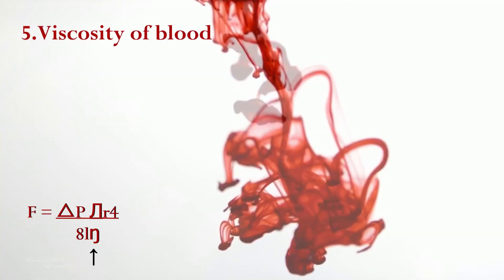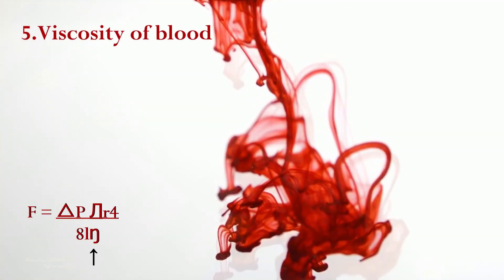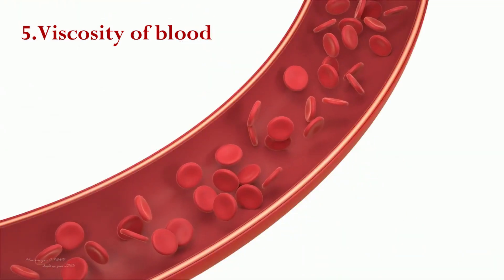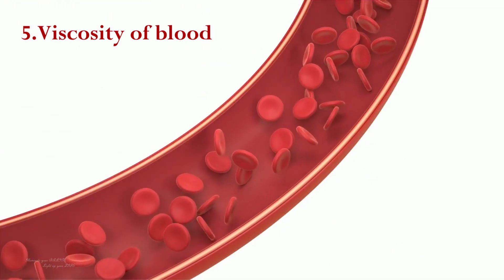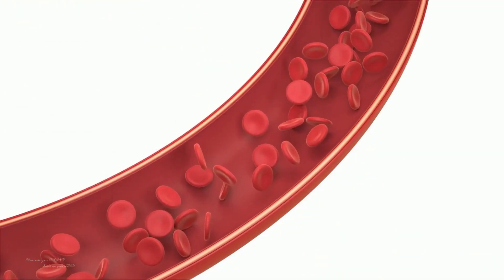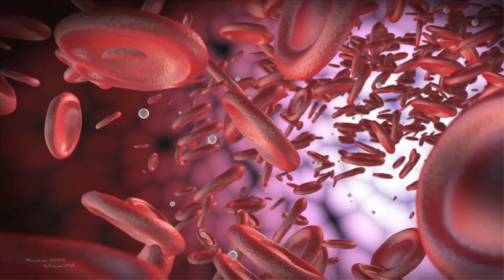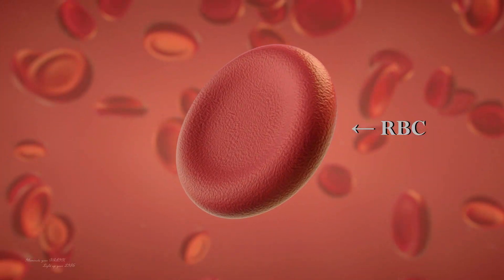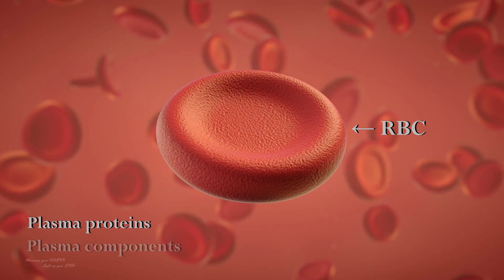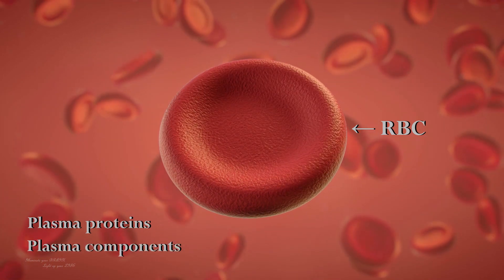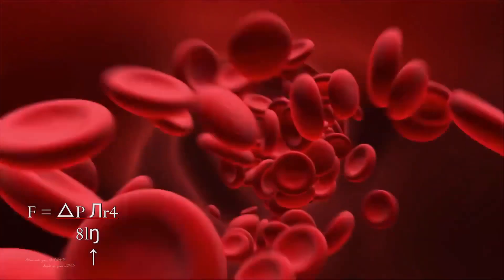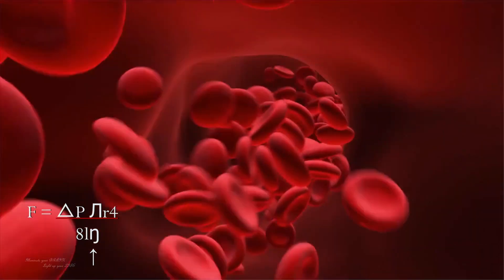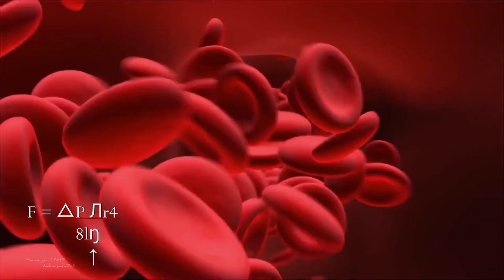Viscosity is the thickness or stickiness of the blood, which affects its ability to flow smoothly through the blood vessels. Blood viscosity is primarily determined by the concentration of red blood cells and the presence of proteins and other components in the plasma. High blood viscosity increases resistance to blood flow, which in turn increases blood pressure.